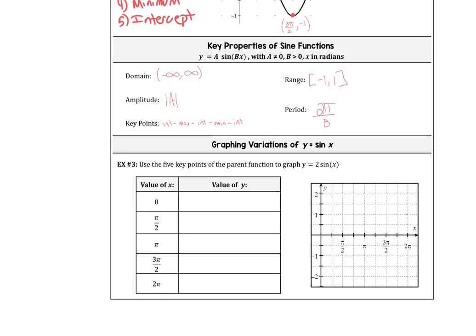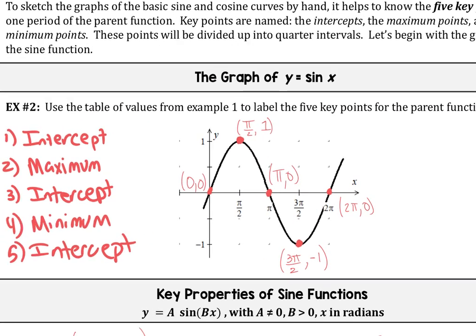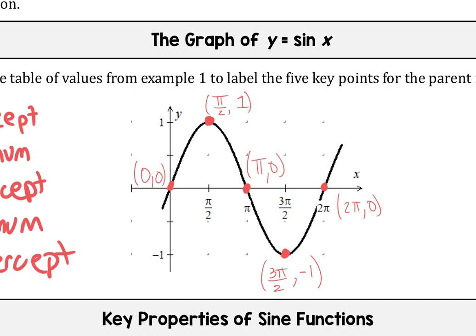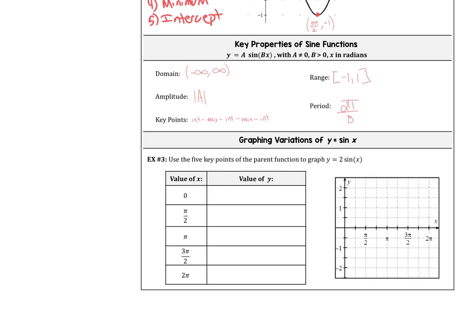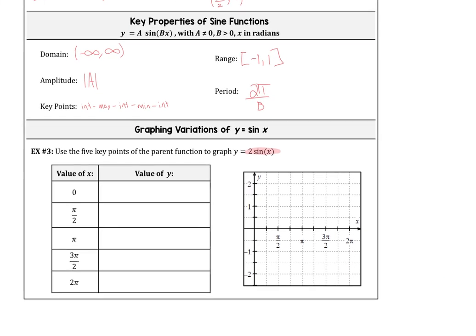Now let's talk about graphing variations. For sine of x, we use our five key points and apply transformations. If the graph is now 2 times the sine of x — recall that is simply a vertical dilation, meaning every y value gets multiplied by 2. So if the range of the original sine function goes from negative 1 to 1, after a vertical dilation the range is now from negative 2 to 2. For example, 2 times the sine of 0: the sine of 0 is 0, so 2 times 0 is still 0.